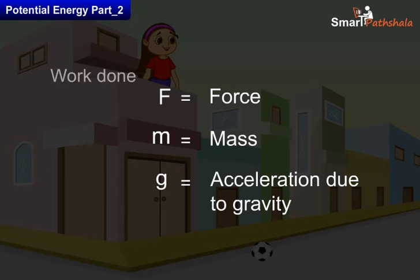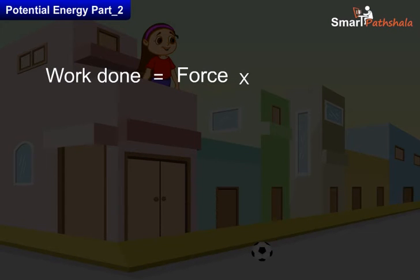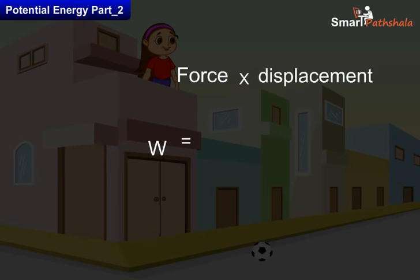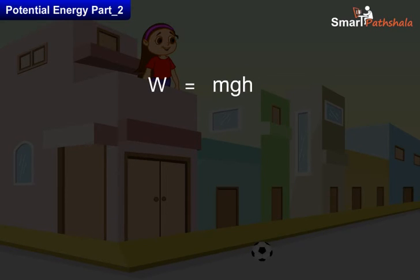We know that work done is equal to force into displacement. Therefore, work done W is equal to F into H, where H is the displacement of the object. Or, W is equal to MgH, since F is equal to Mg.